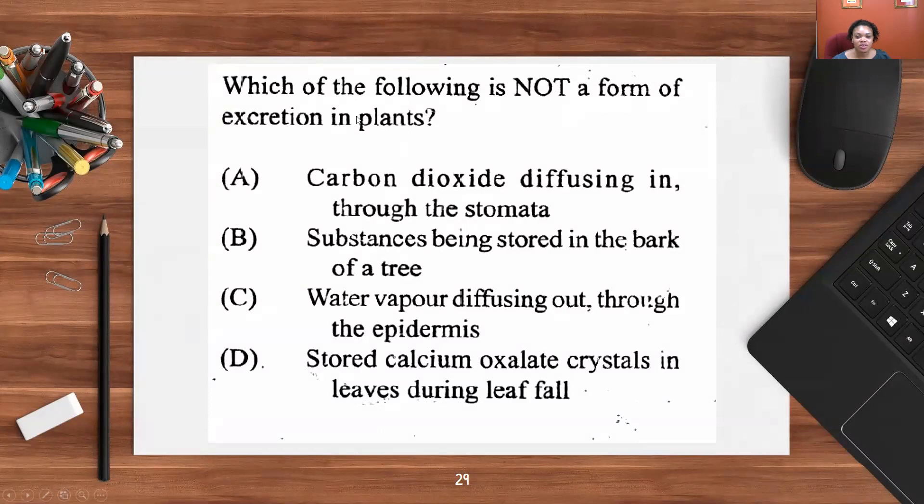Which of the following is not a form of excretion in plants? Carbon dioxide diffusing in through the stomata, substances being stored in the bark, water vapor diffusing out, stored calcium oxalate crystals in leaves during leaf fall. We know C and D are correct because the question is asking not. This is saying diffusing in. That's an indication, since excretion is usually a removal. So A is the correct response.